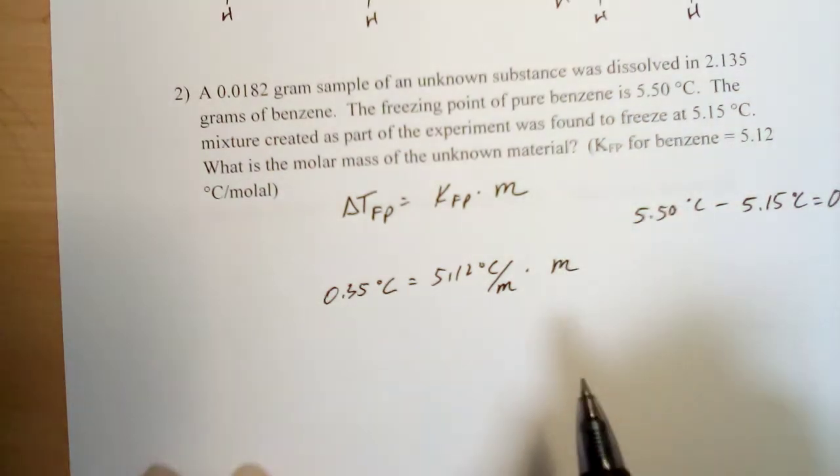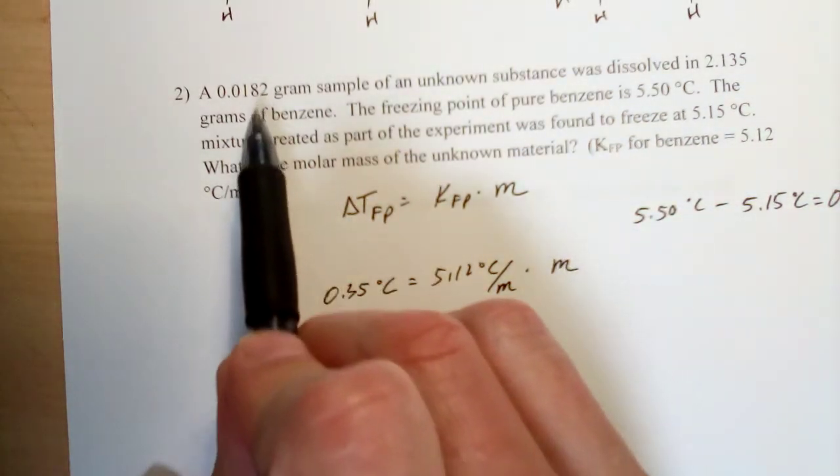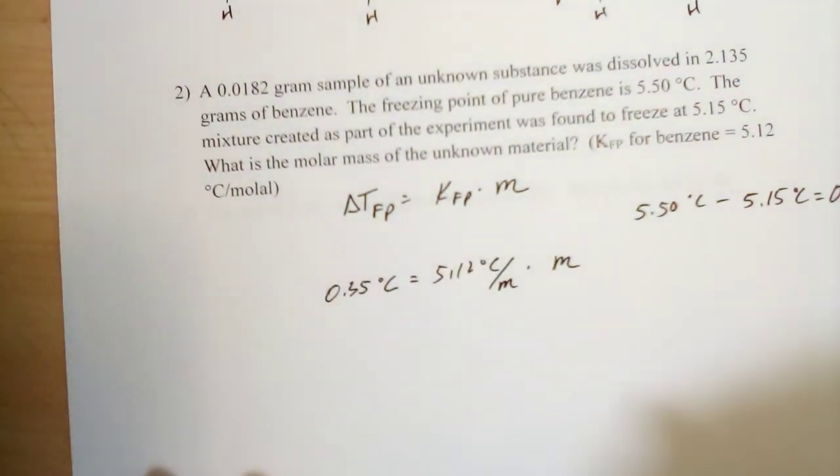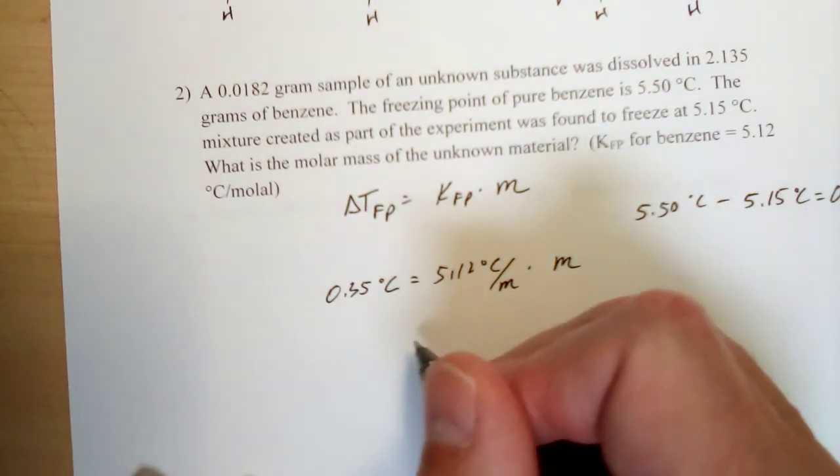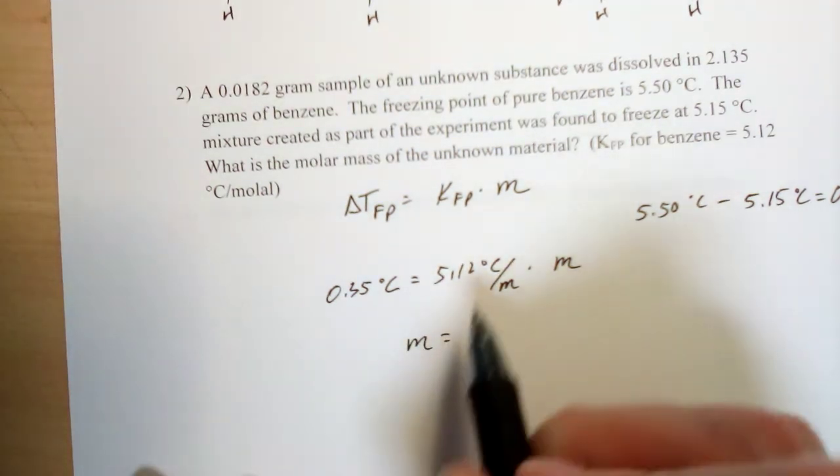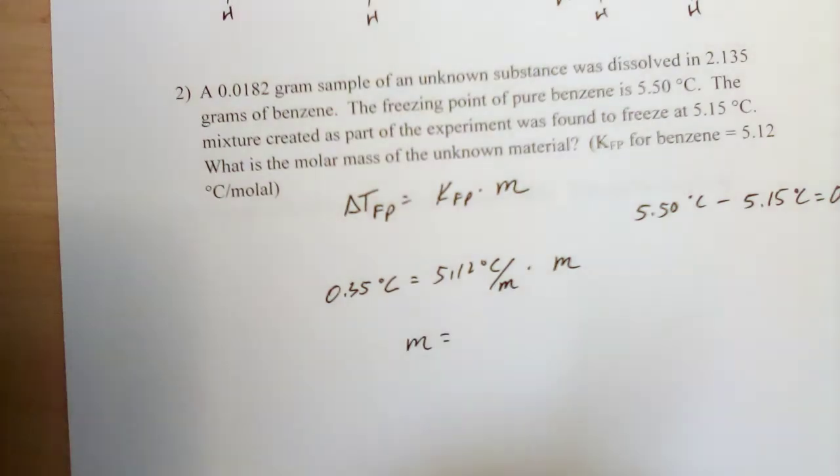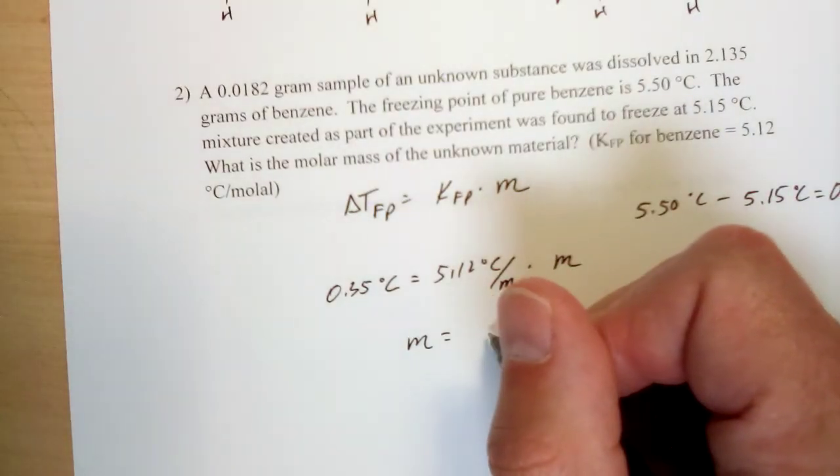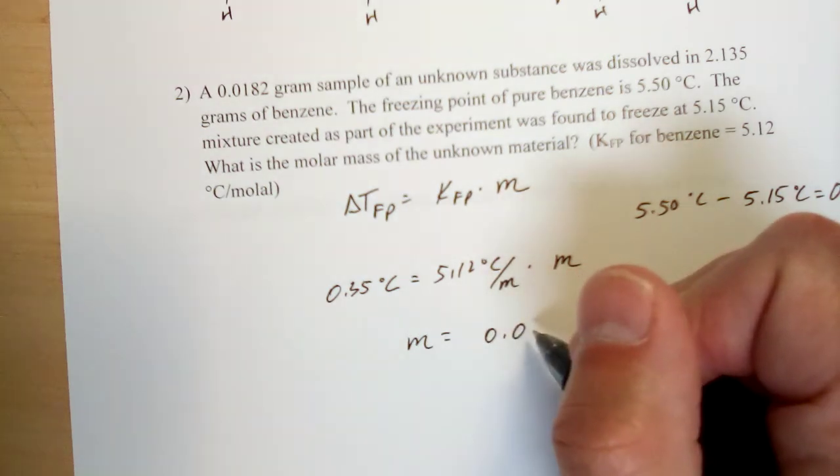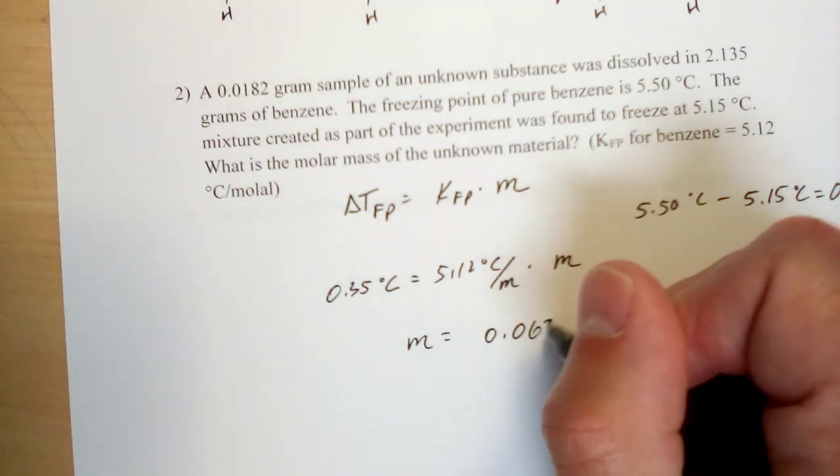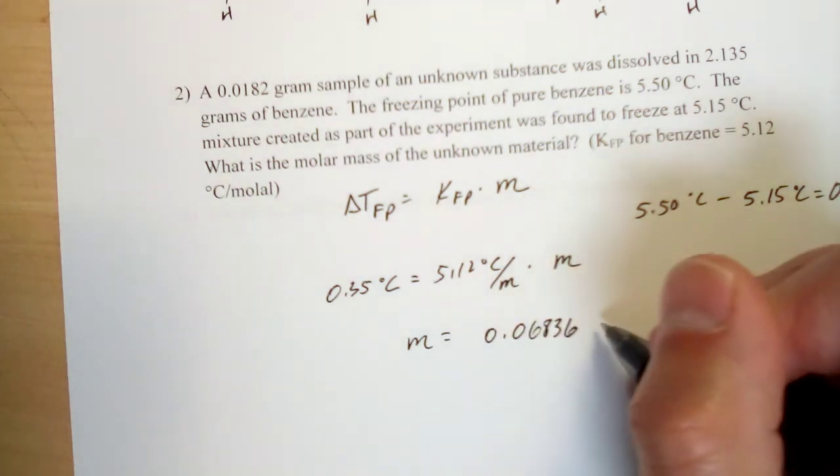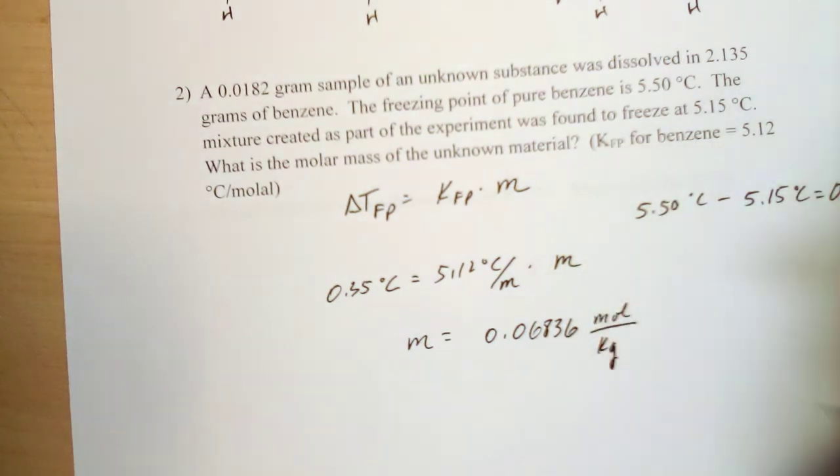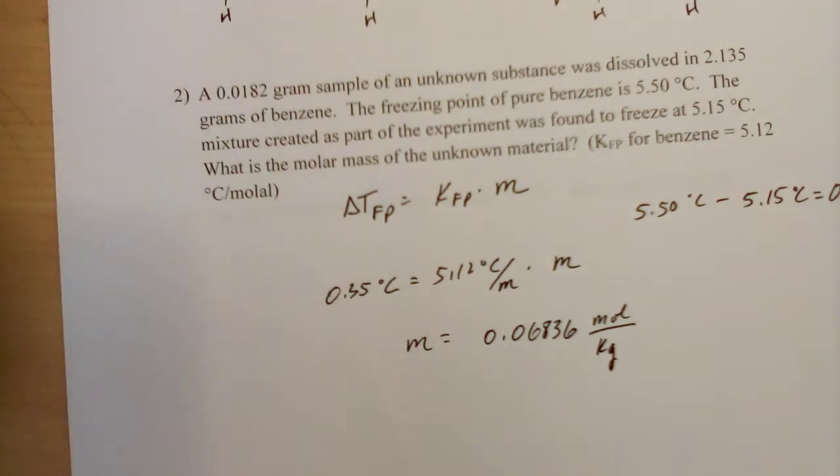Okay, plug in 0.35 degrees C here for our temperature change, plug in 5.12 degrees C per molal for our constant, and that gives us the ability to solve for the molality of this solution that we generated up here at the start of the problem. So if I divide both sides by 5.12, I will get the molality of the solution, and that is 0.06836.